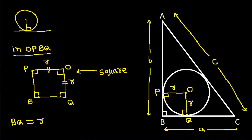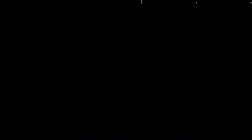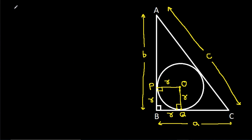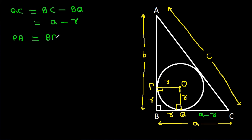So BQ will also be equal to R, and PB will also be equal to R. Now QC will be equal to BC minus BQ, which is a minus R. And PA will be equal to BA minus BP, which is b minus R.